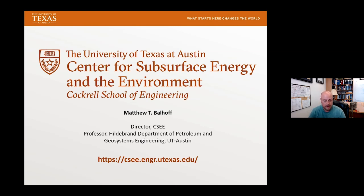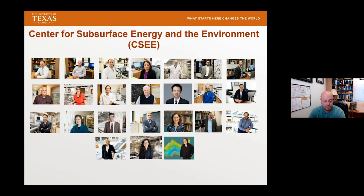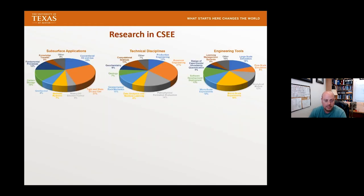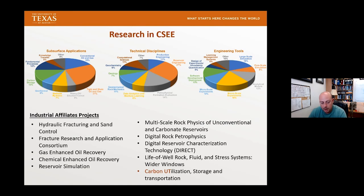We are a research center at the University of Texas at Austin with over 20 faculty and principal investigators. We work on a variety of subsurface applications and collaborate with industry through industrial affiliates projects. The newest IAP is Carbon UT — carbon utilization, storage, and transportation. We had a webinar just last month on the subject, which is posted on YouTube if you're interested.